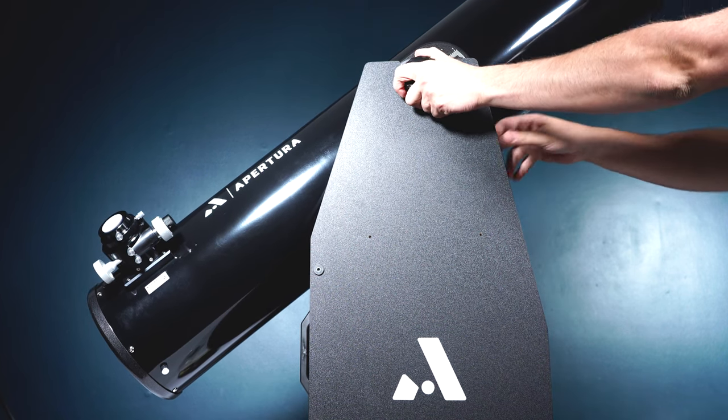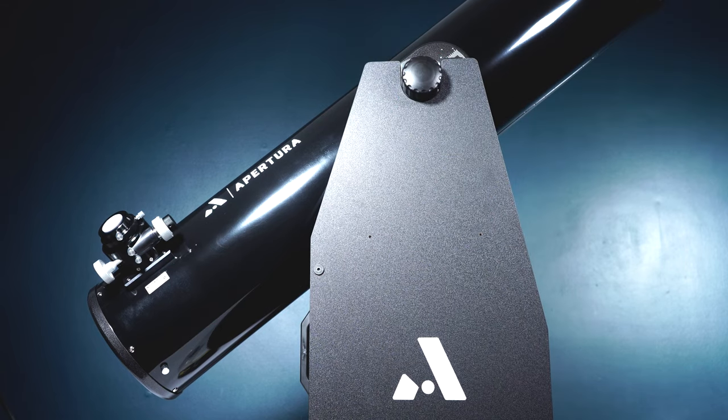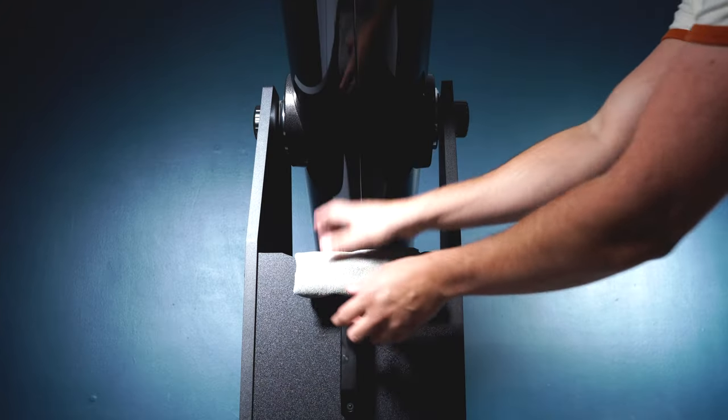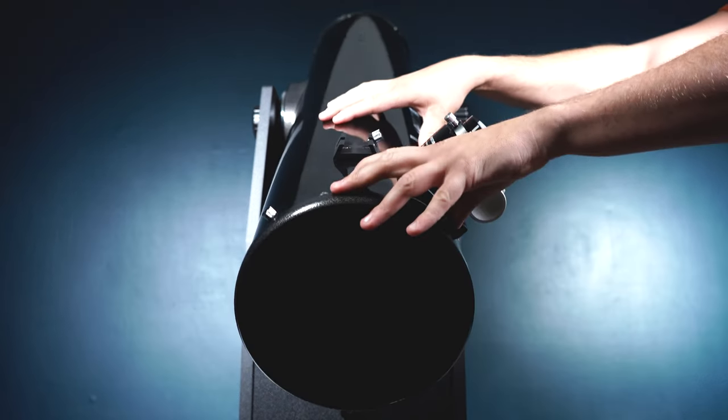We recommend performing the entire installation process with the OTA in the base so for this step you're going to want to position the scope so that the rear cell is in the uppermost position possible. This is going to prevent any damage of the OTA once the mirror is removed as it will want to fall forward anyways. Feel free to place a towel or a rag on the resting point between the OTA and the dobsonian base.